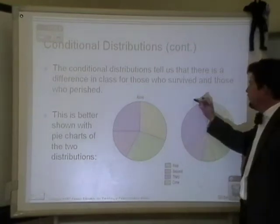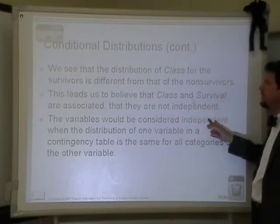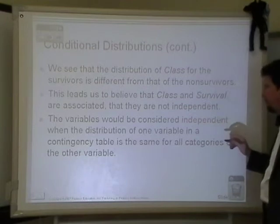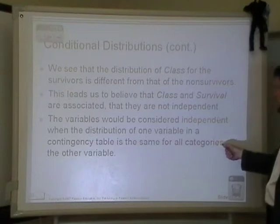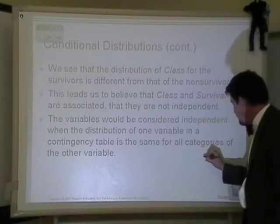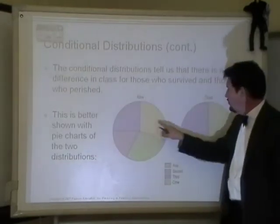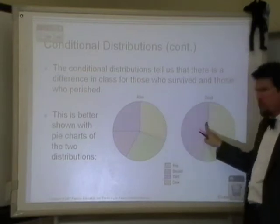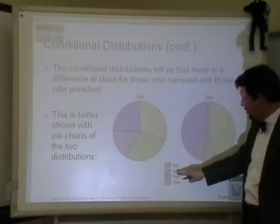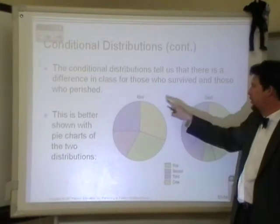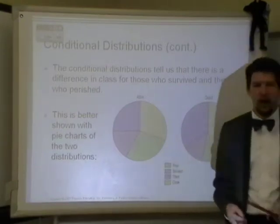What this says is this: these variables are going to be independent of each other if the distribution of one variable in a contingency table is the same for all categories of the other variable. If these conditional distributions are the same, that's going to tell me that the variable of class is not going to influence whether or not you survived or died.